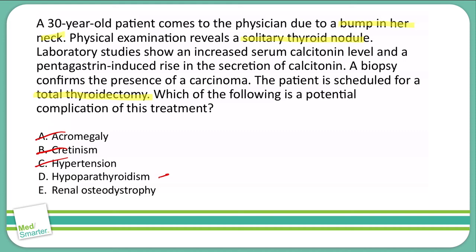Let's skip over D for just a minute and go to E — renal osteodystrophy. Renal osteodystrophy comes along with patients that have renal failure. We can see some signs associated with what could be caused by removing the thyroid, but I don't really think this is going to be caused by removing the thyroid. So in turn, my answer is going to be D — hypoparathyroidism. And that is our correct answer, D.